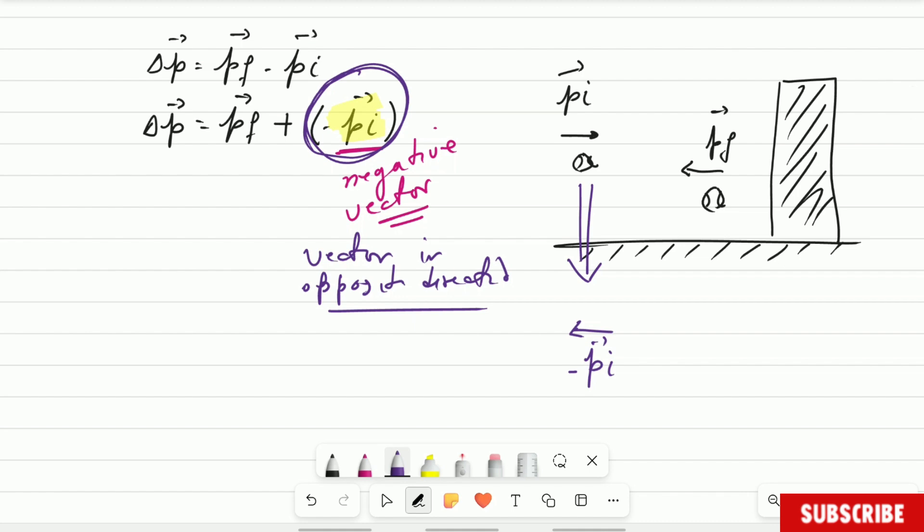All I did was to change the direction because it's negative. According to this formula, it's a negative vector. Is that understood? And then I'm going back to grade 10. Once upon a time, you were in grade 10. You are going to add those two vectors. The negative one and the final momentum. How do you add vectors? Do you remember using the method tail to head?